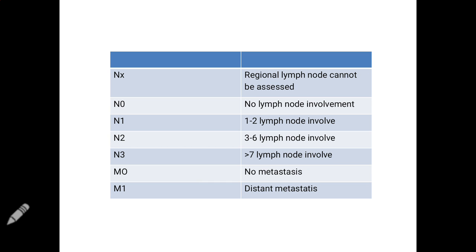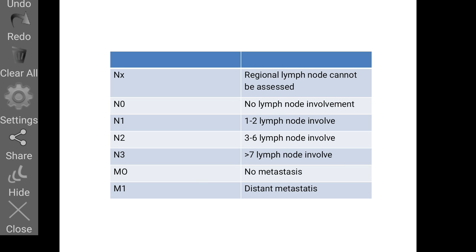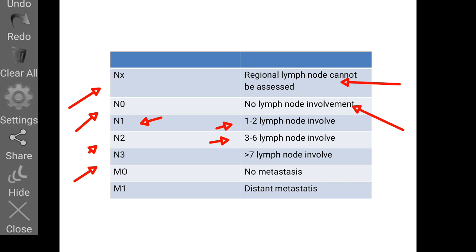For lymph node staging: NX means regional lymph nodes cannot be assessed; N0 means no lymph node involvement; N1 is 1–2 lymph nodes; N2 is 3–6 lymph nodes; N3 is 7 or more lymph nodes. M0 indicates no distant metastasis; M1 indicates distant metastasis. The most common site of distant metastasis is the liver, followed by lung, then bone.